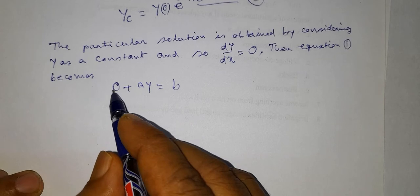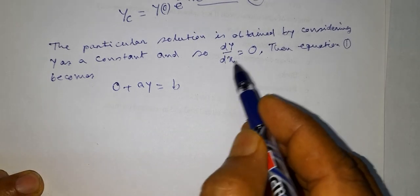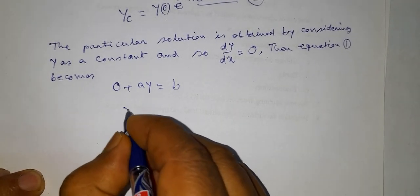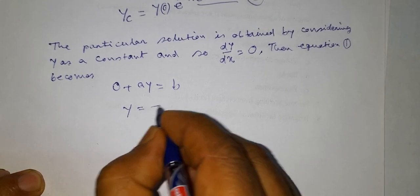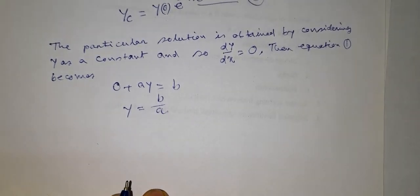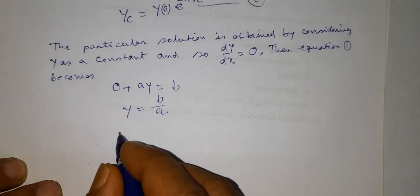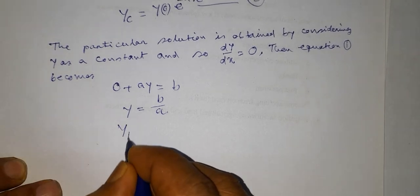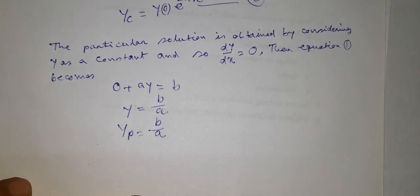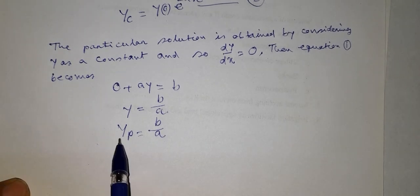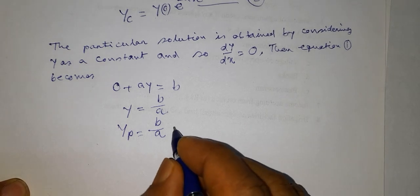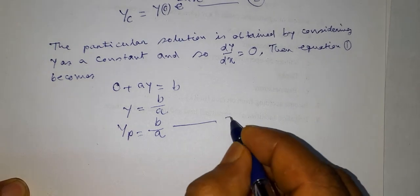Here, instead of dy/dx, we write 0. Therefore, y = b/a. Or, y_p = b/a, because this is the particular solution of this differential equation. So this is equation number 3.